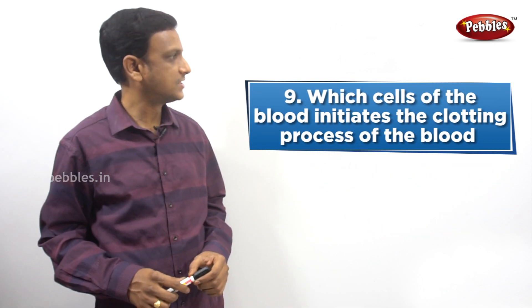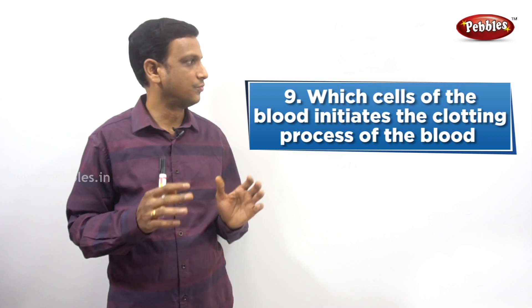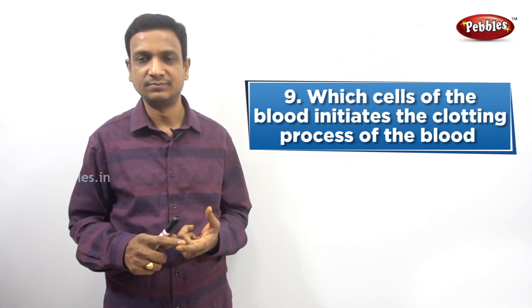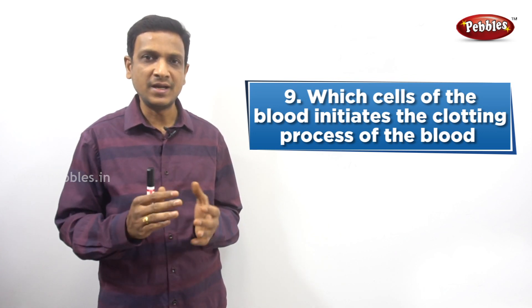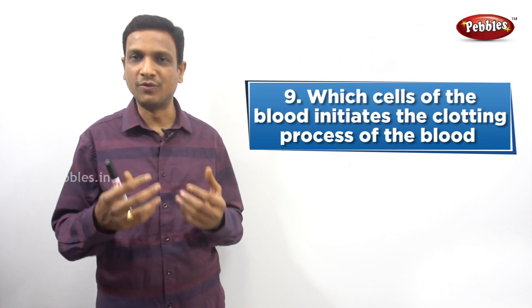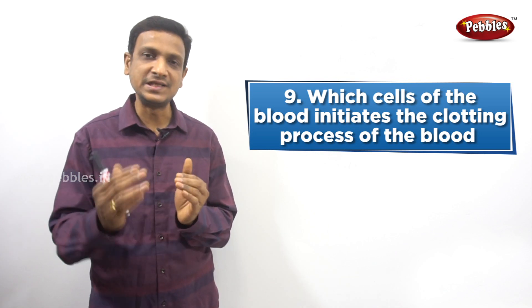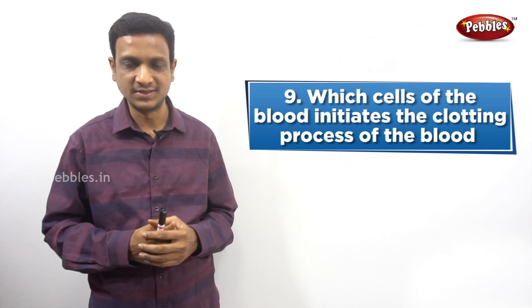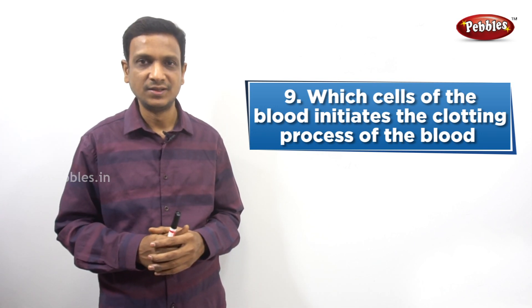The next question: which cells of the blood initiate the clotting process? Blood clotting occurs when there is a cut - bleeding takes place and blood flows out. When a blood vessel is cut, blood flows out and it has to be stopped, otherwise it leads to excessive bleeding and blood loss. The cells of the blood itself help initiate this clotting process.